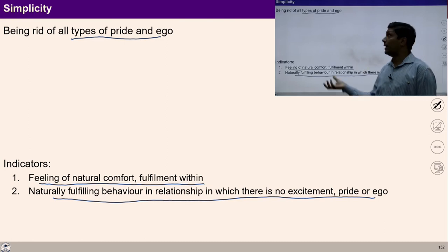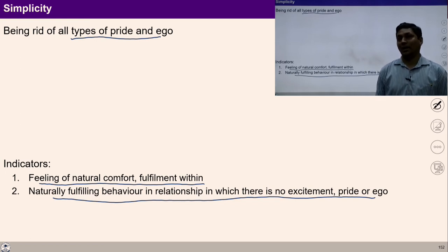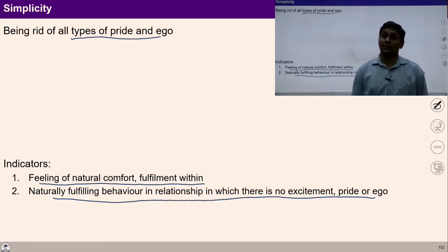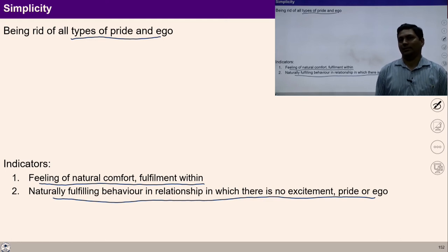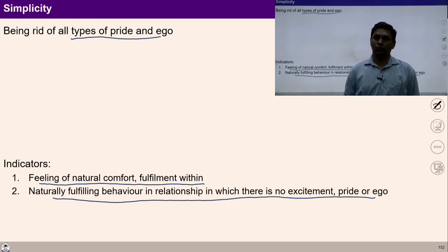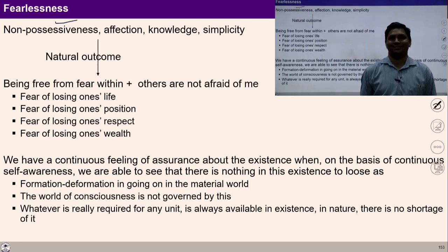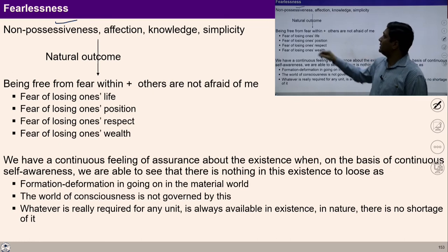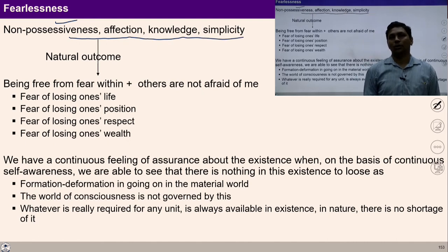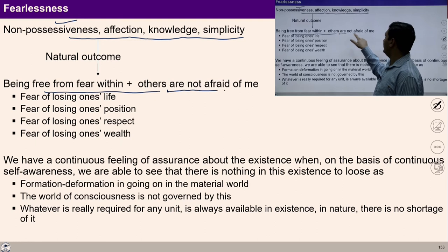For a harmonious society, simplicity in everyone is required, affection in everyone is required, non-accumulation in everyone is required. After simplicity, let us move towards the next component of this formulation — fearlessness. When we follow non-possessiveness, affection, knowledge and simplicity, its natural outcome is being free from fear within and free from fear from others.